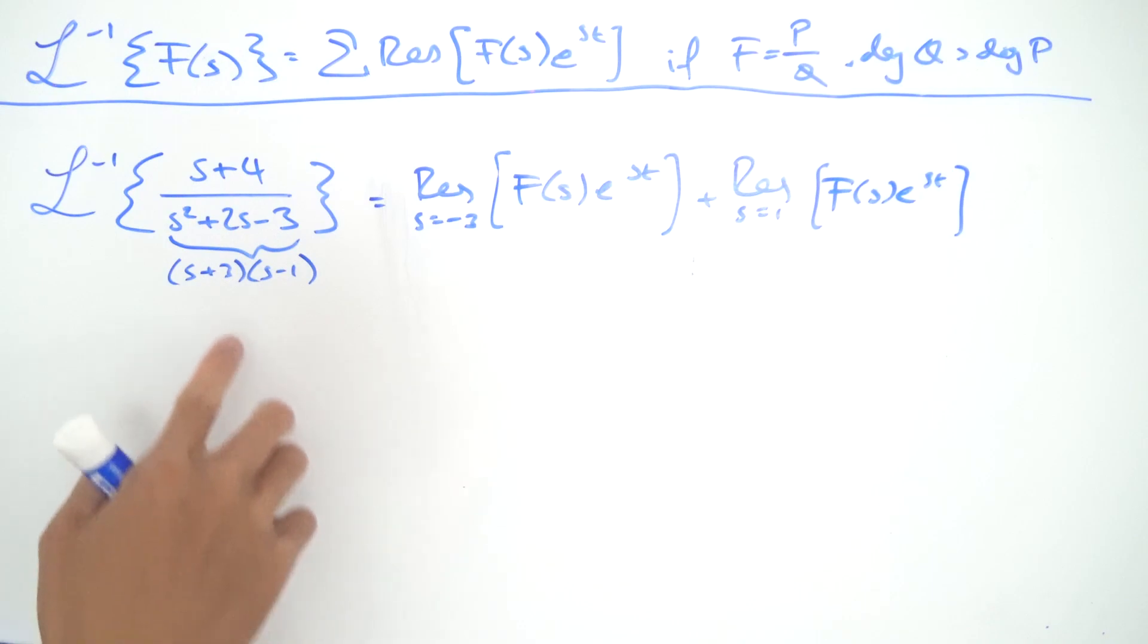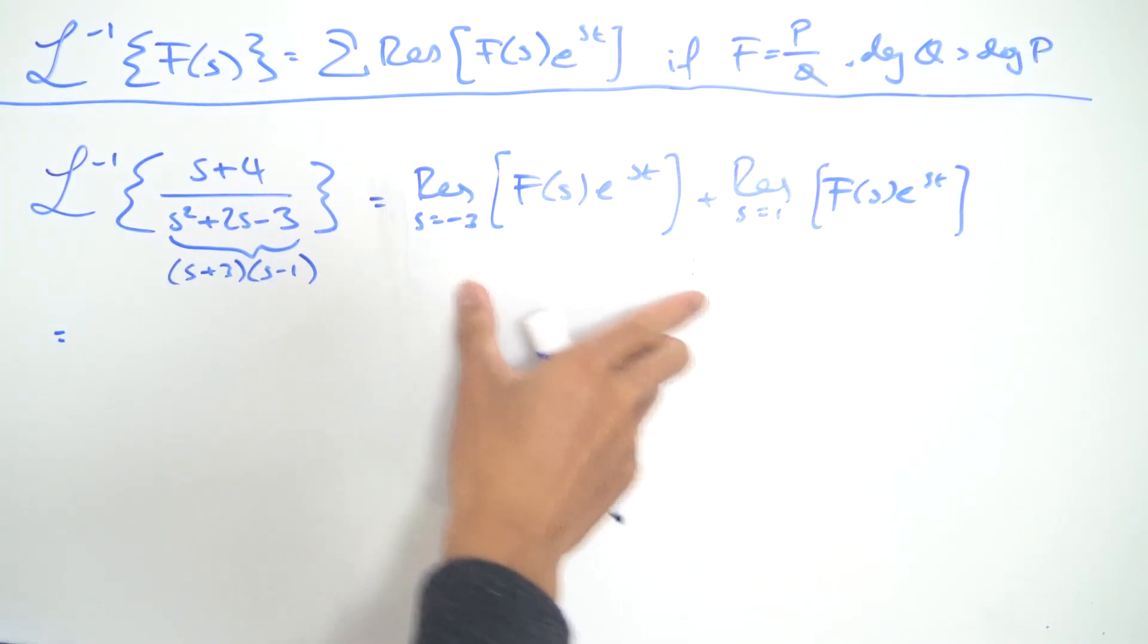And I want you to notice one thing: both of these poles are actually simple poles because we just have linear factors, so we can just use the formula for residues at simple poles on both of these.